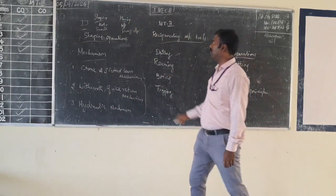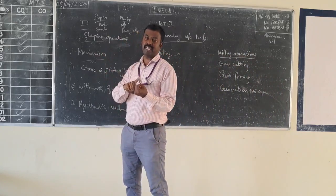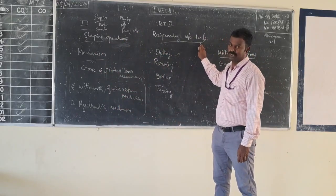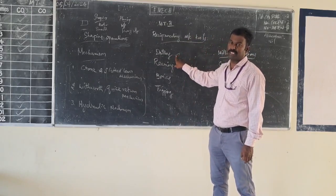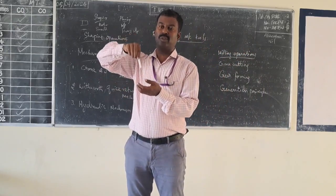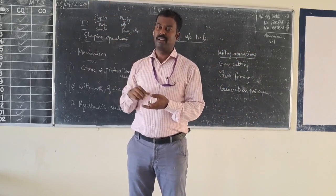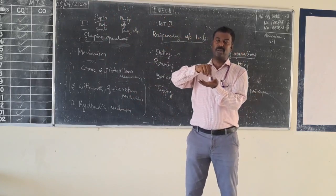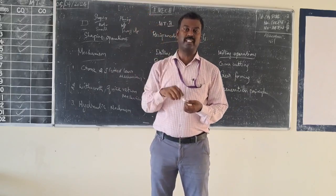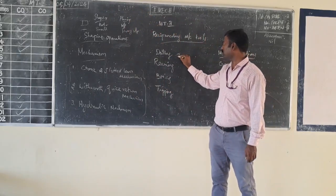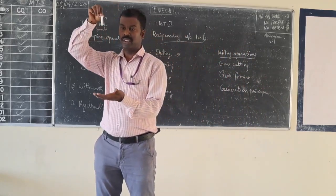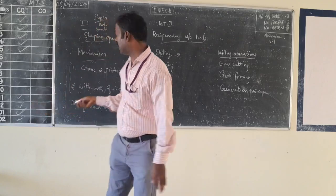So first we have the shaping machine, second is the planning machine. Third, what are the various reciprocating machine tools? The drilling machine also comes under reciprocating tools. In the drilling machine, you will apply pressure manually. By using manual feed, you will do the drilling operation on the workpiece. If you release the lever, automatically the tool will return to its home position. So this is also a reciprocating motion - one forward thrust and one return motion.